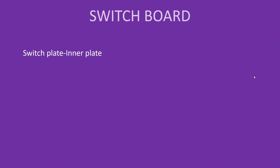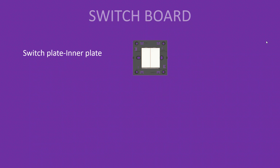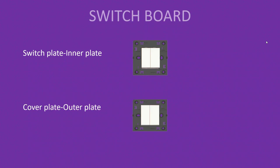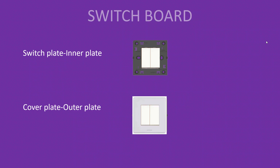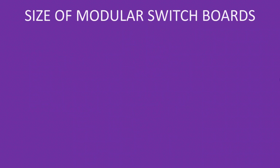Another component is the switch plate or inner plate, which provides housing for the wiring accessories like switches and sockets. In modular switchboards, we fix the switches on the inner plate. Then there is the cover plate or outer plate, which is used to cover the inner plate and gives a more pleasant look.